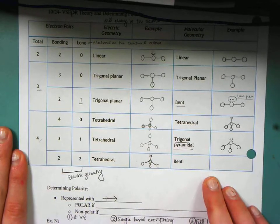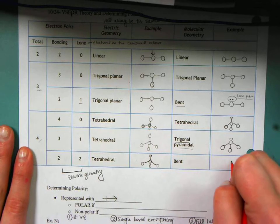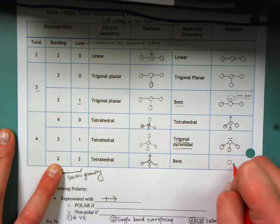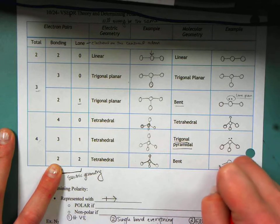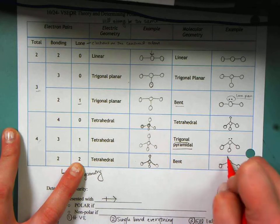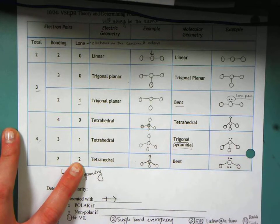And finally, I have a bent structure. So bent structure, I have two bonds being made with my central atom, and then I have two electrons, two lone pairs on my central atom.